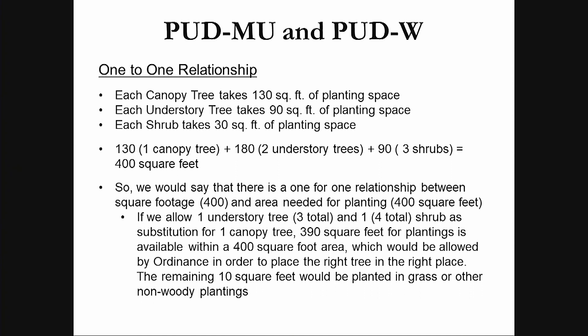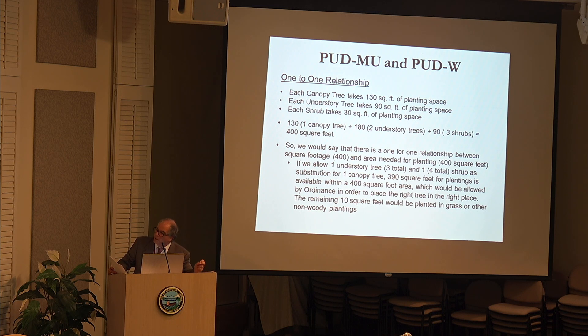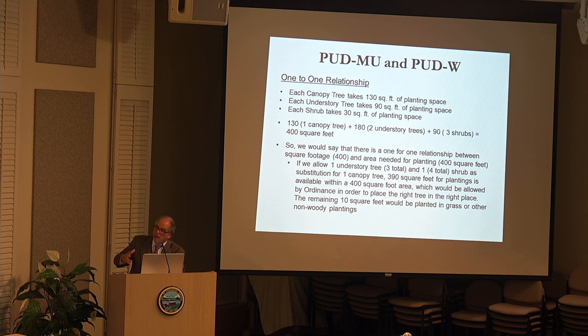The wording of this is much more complicated than it actually is. Essentially, one canopy tree takes 130 square feet of planting area. One understory tree takes 90 square feet of planting area, and a shrub takes about 30 square feet of planting area. If you add it up — one canopy tree, two understory trees, and three shrubs — you get 400 square feet. That's what we would call a one-to-one relationship.